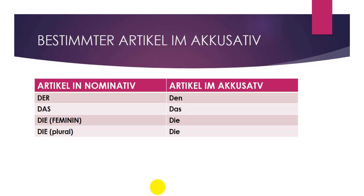To summarize the articles: in the nominative, 'der' becomes 'den' in accusative; 'das' stays 'das'; 'die' for feminine stays 'die'; and 'die' for plural also stays 'die.'